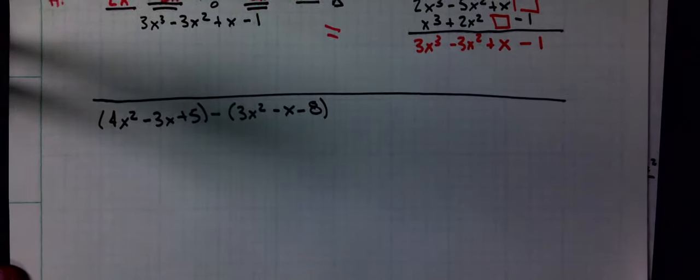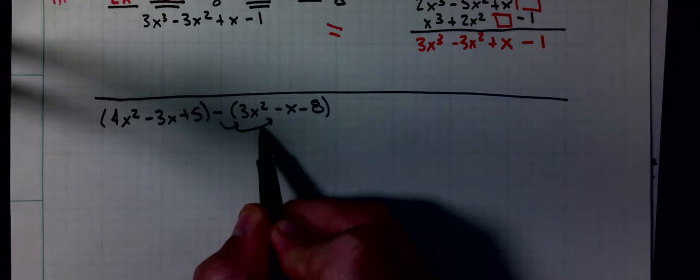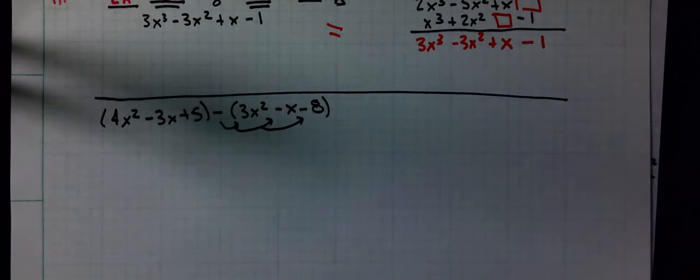The second example is a subtraction. We do the first step horizontally the exact same way. We get rid of the parentheses. The thing is, this negative applies to everything inside that second set. So that means you're going to have to change the sign of everything on the right-hand side.